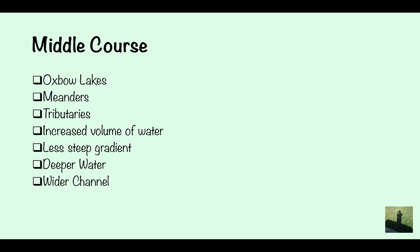In the middle course, you're going to have features like oxbow lakes and meanders and tributaries. And you're going to have increased flowing water, less steep gradient, deeper channel, and a wider channel.